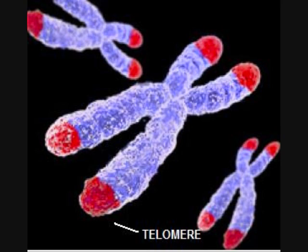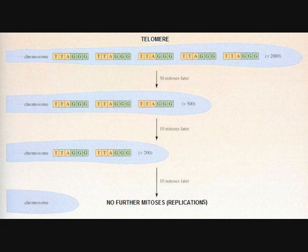This is where telomeres come into play. They are repeated fragments of DNA present at the ends of our genetic material which protect our genes from the erosion of replication. However, after a certain number of divisions, the telomeres are worn out and no longer protect our genes. This leads to cellular senescence, or in other words, the aging and death of the cell.